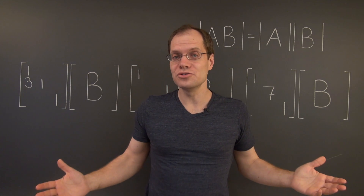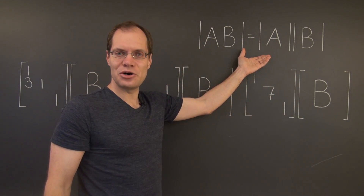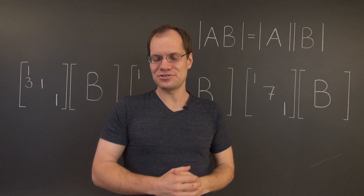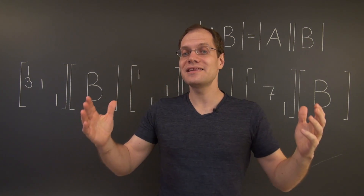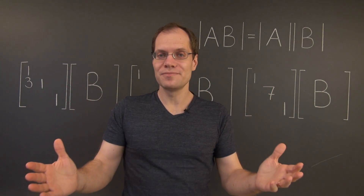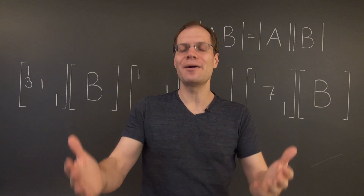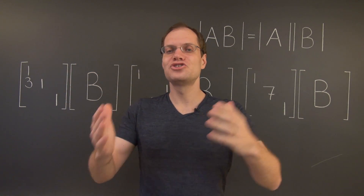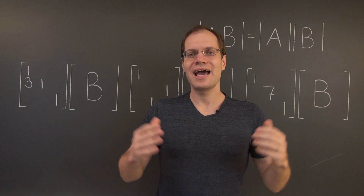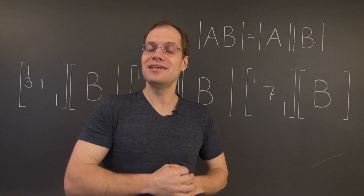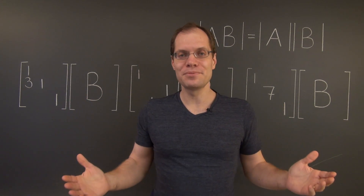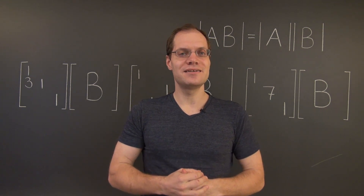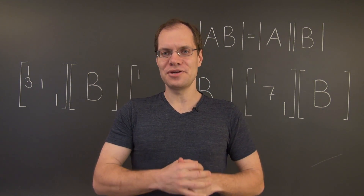And we once again see that this identity holds when A is this kind of elementary matrix. So this shows that this identity holds when A is any kind of elementary matrix. The only thing that's left is to take a hop from elementary matrices to general matrices. And that's exactly what we're going to do in the next video, by remembering that any matrix can be represented as a product of elementary matrices.